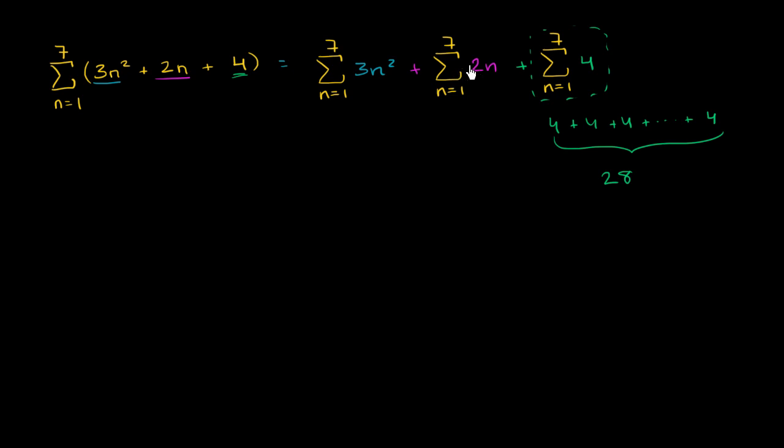Now let's look at this piece right over here. Once again, we could just do it by brute force. 2 times 1 is 2, plus 2 times 2 is 4. So you're going to essentially do the first 7 multiples of 2 is one way that you could think about this. Or if we were to expand it out, let me expand it out. This is going to be 2 plus 4 plus 6, all the way to when this is 7, all the way to 14.